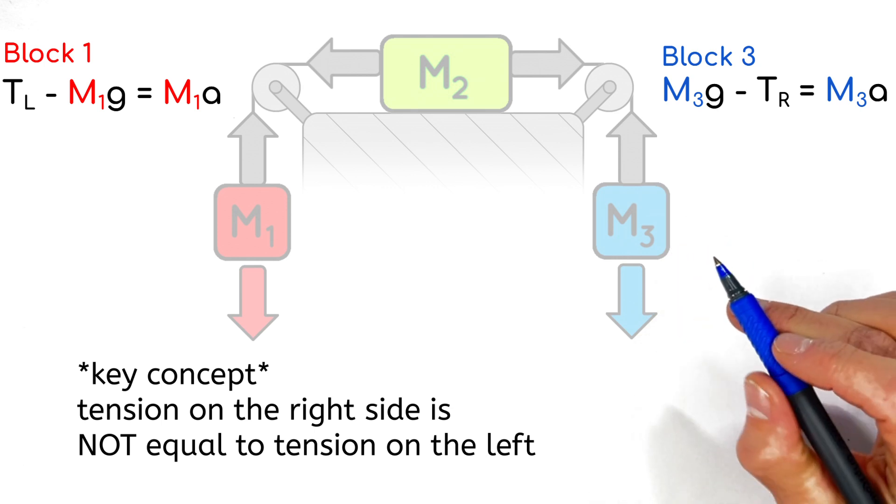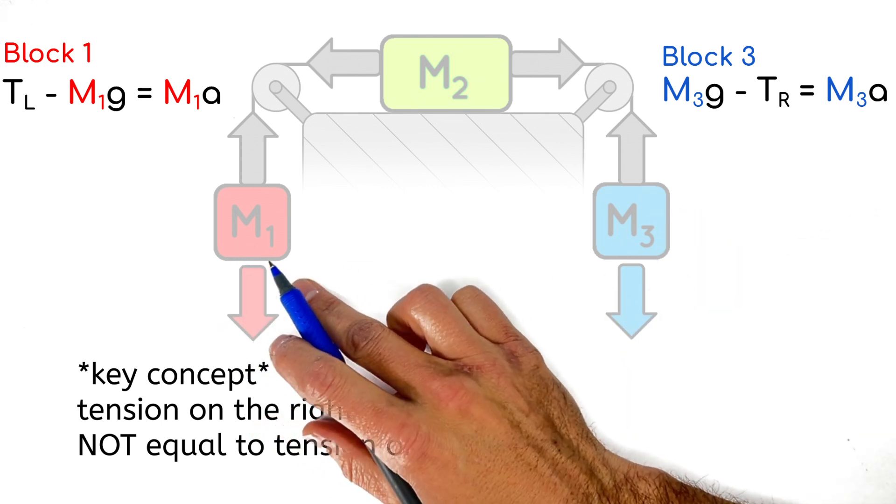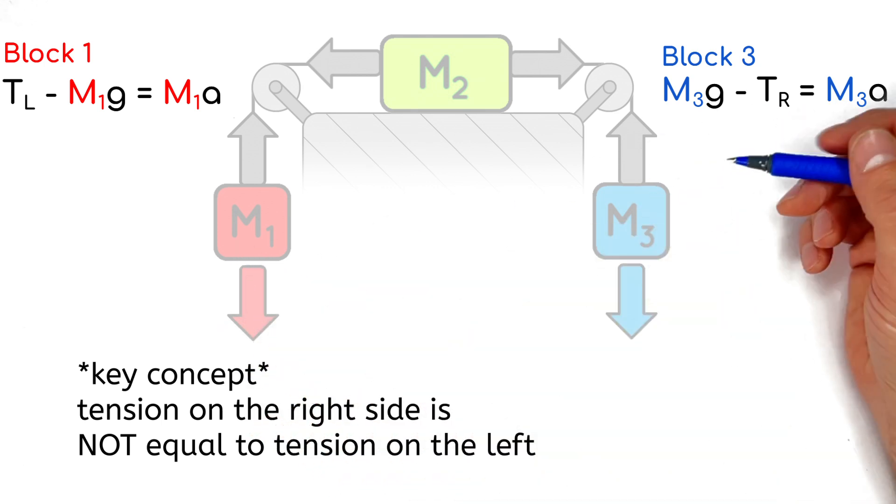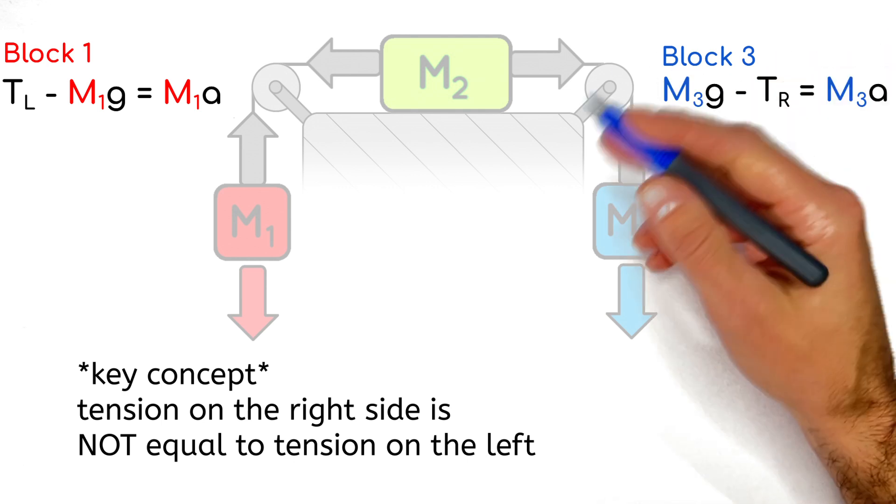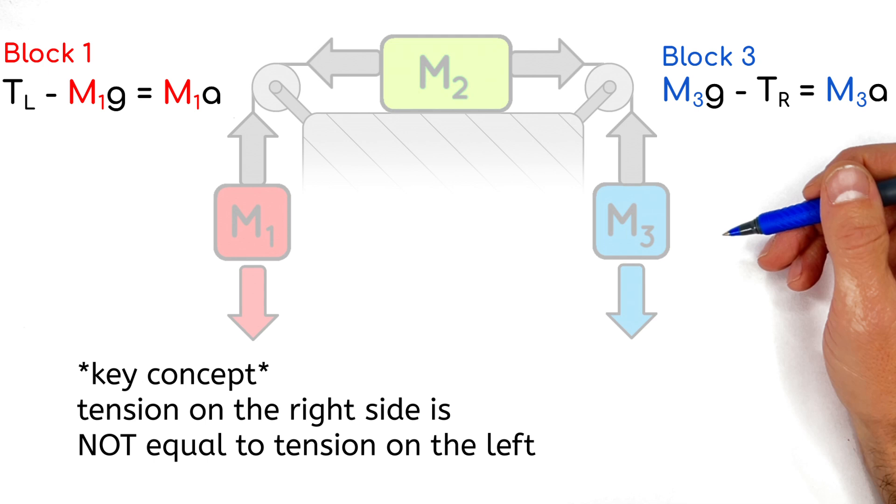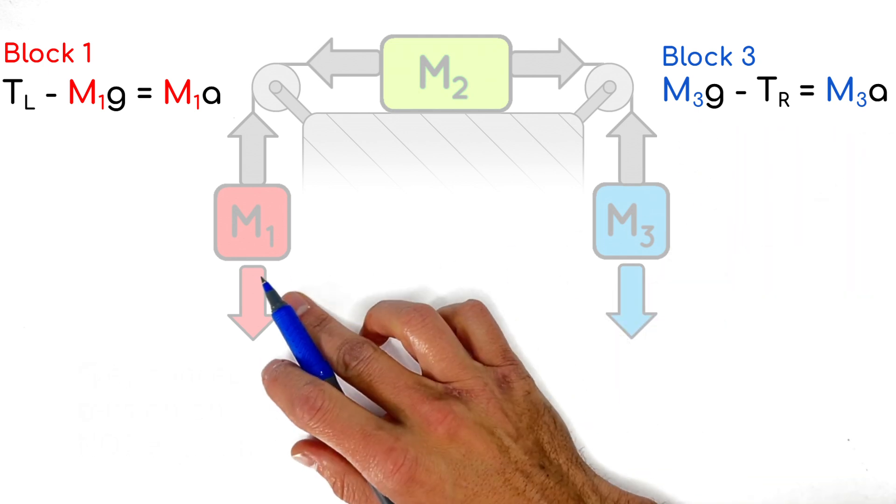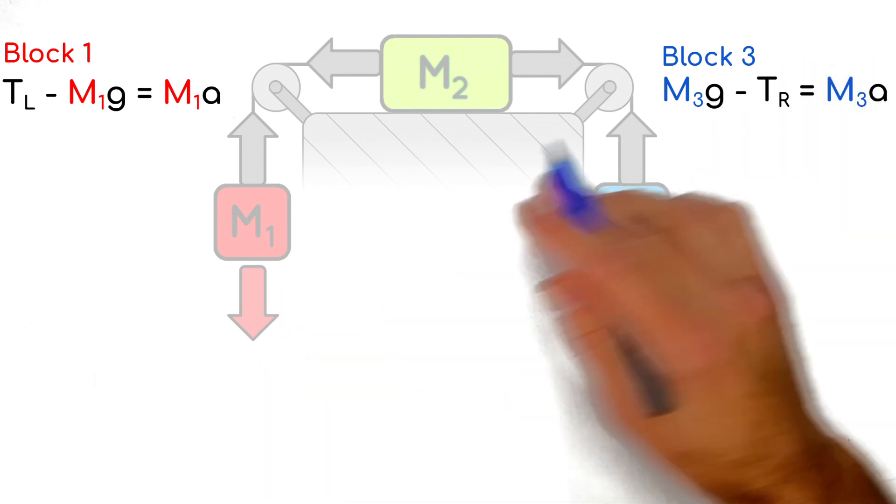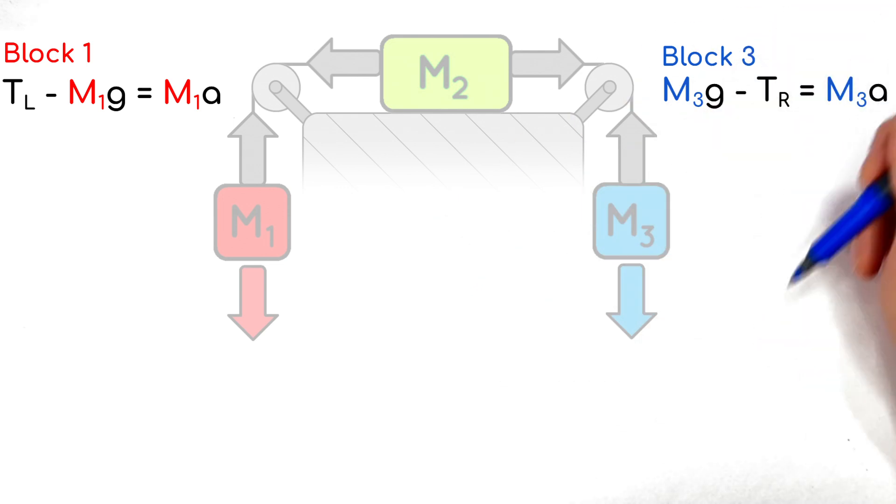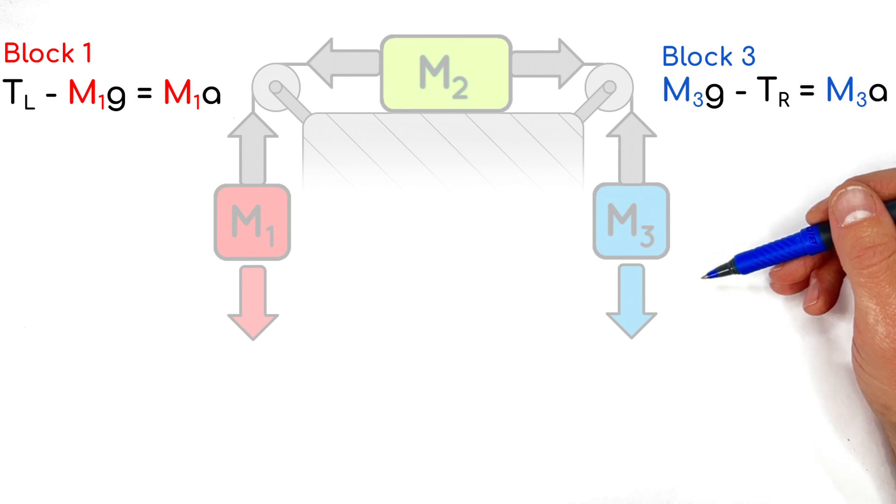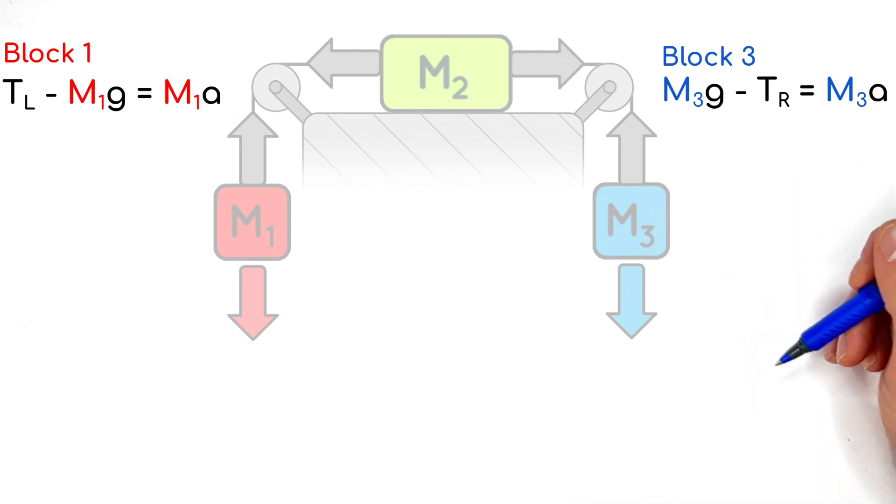And one of the big concepts that people mess up in this problem is that this tension in this right string is not equal to the tension in the left string. That's likely to come up on something like an AP exam that people will miss if they just sort of blow through the simplified version of this problem. I'll explain why these two tensions can't be the same in a minute here when we look at this central block. Let's finish this up here. We've got this M3G minus T is equal to M3A. That's just Newton's law applied to this block here.